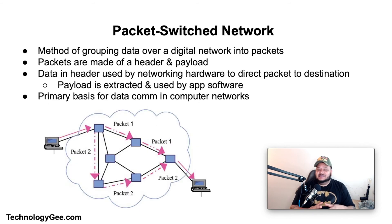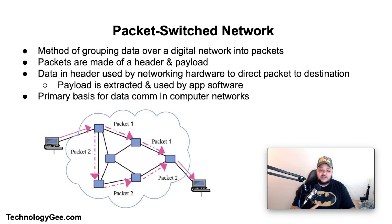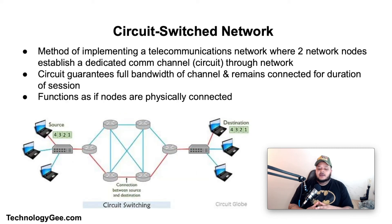Packet switching is a method of grouping data transmitted over a digital network into packets. Packets are made of a header and a payload — data in the header is used by networking hardware to direct the packet to its destination, where the payload is extracted and used by application software. Packet switching is the primary basis for data communications in computer networks around the world.